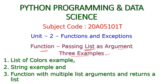The first program we are going to pass a list as argument — this list contains a list of colors. Second, we are going to pass a string, that is a list of characters, that will be passed to the function argument. And the third example: a function with multiple lists as arguments, and the function will return a list to the main program. Let us see all these things one by one with very simple examples.